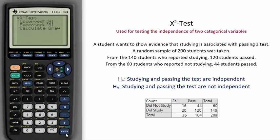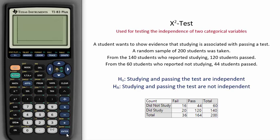Under the Chi-squared test of independence, we only need to put in the observed values. It will calculate for us the expected values. Going down to draw will show us the Chi-squared distribution and give us the Chi-squared value along with the p-value.